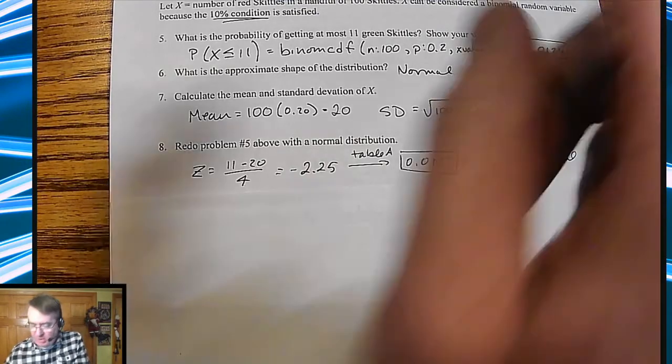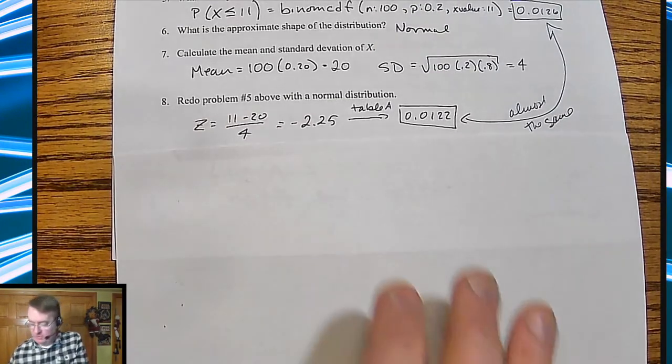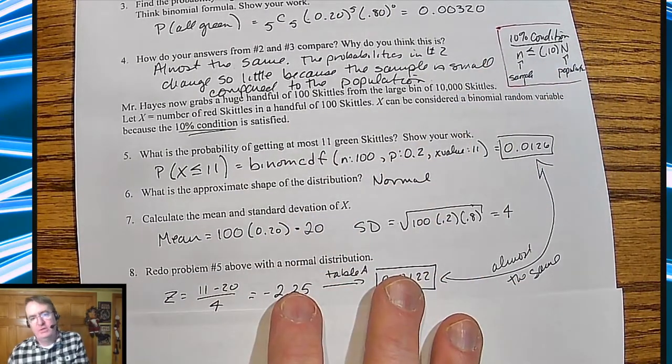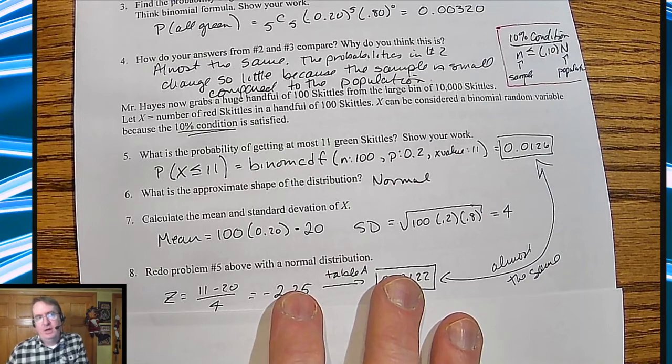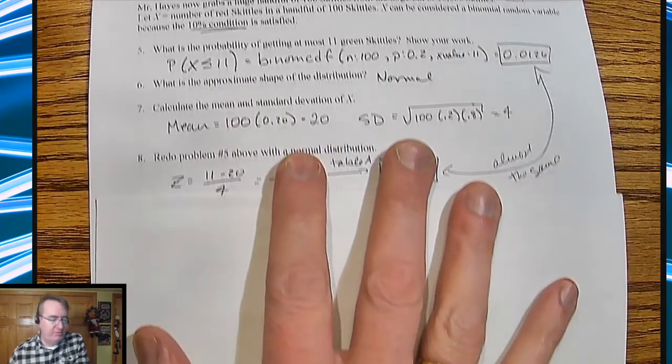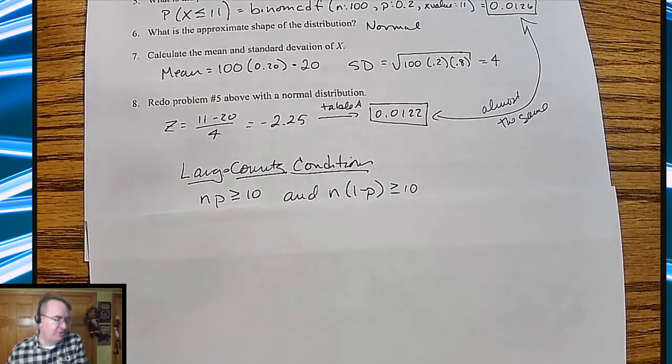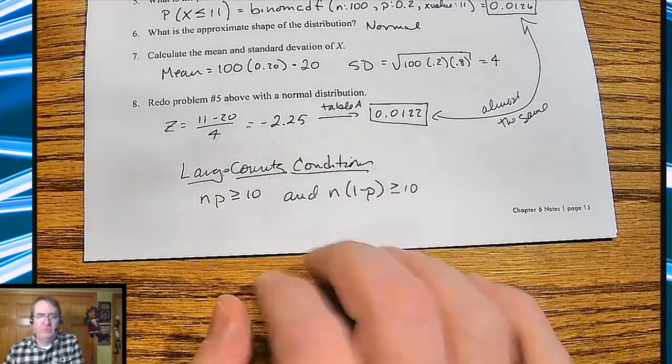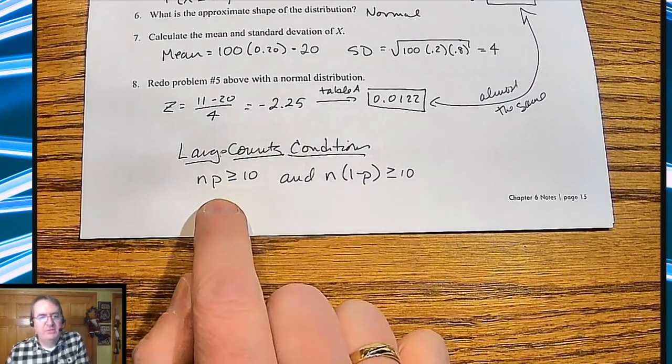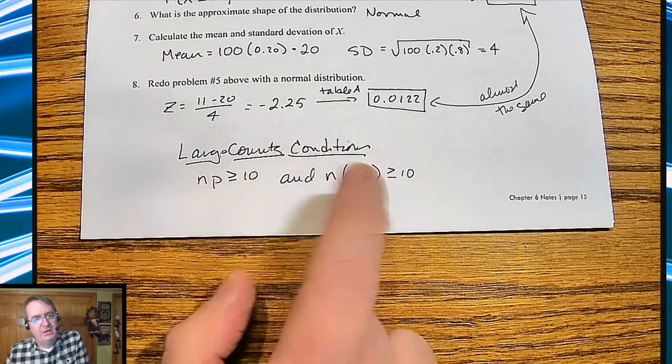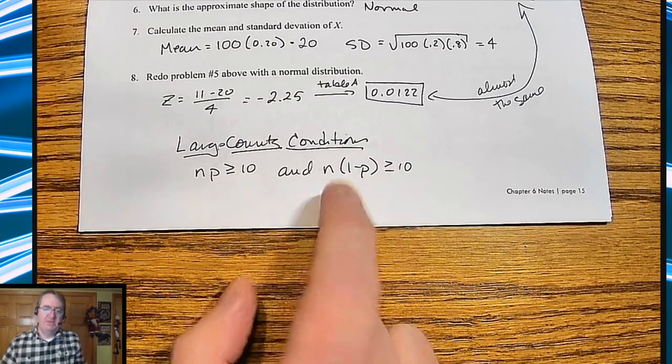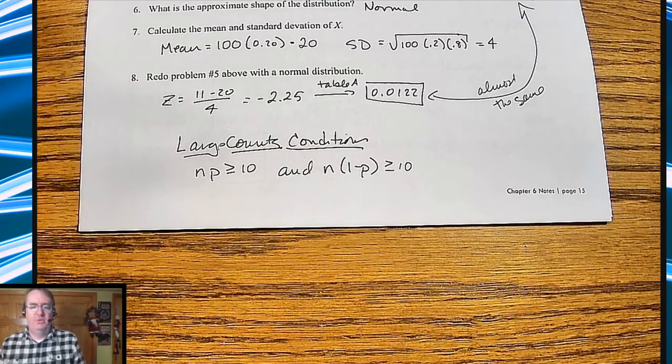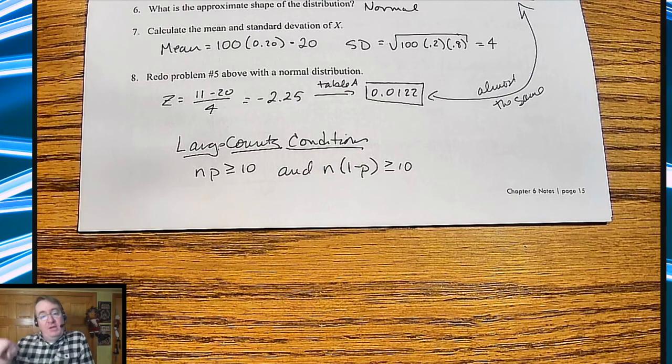So those are almost the same. And so what we now have, so in addition to the ten percent rule up here, ten percent condition up here that allows us to treat places where we can treat as binomial whether or not we have replacement or not, now we have something called the large counts condition. And large counts allows us to treat something as normal. And we'll formalize this here in a second. If the number of successes is bigger than 10 and the number of failures is bigger than 10, effectively then you've got enough in both sides that you can say okay, we can pretty much treat it as normal, and away you go. So anyway, we'll formalize this in the next video.